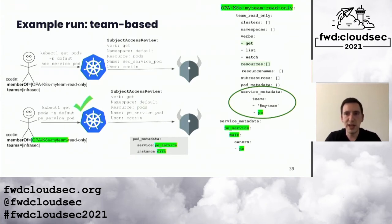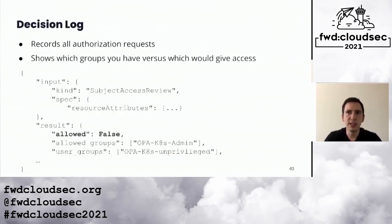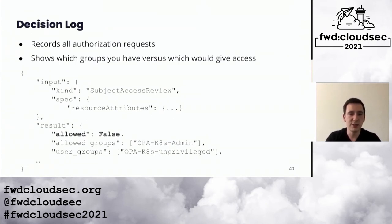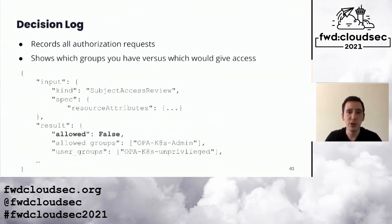Note that we could still add a static value into the capability — if we added that team there, the team would match again and the request would become allowed. Each authorization request ends up with a log being recorded. This has the basic information like whether the result was allowed or denied, and the various input in the Subject Access Review that Kubernetes sent to OPA. What's really neat is that it shows you which groups would have been allowed versus which groups the user had — making it very easy to debug requests and figure out what capabilities to add to someone who needs to do something.